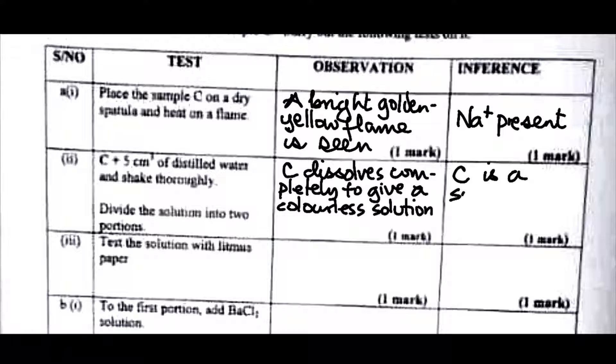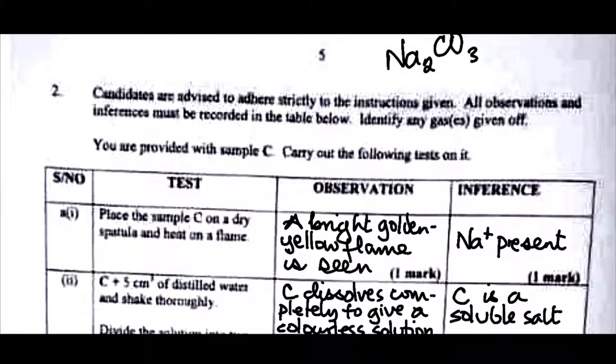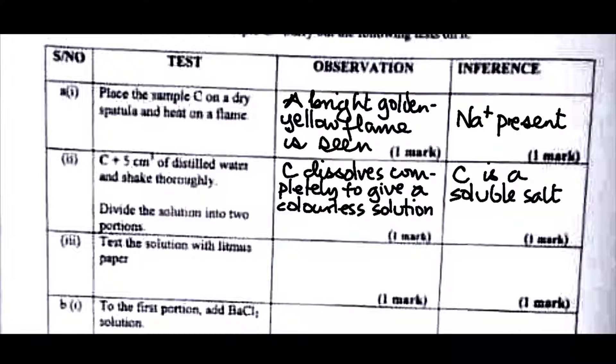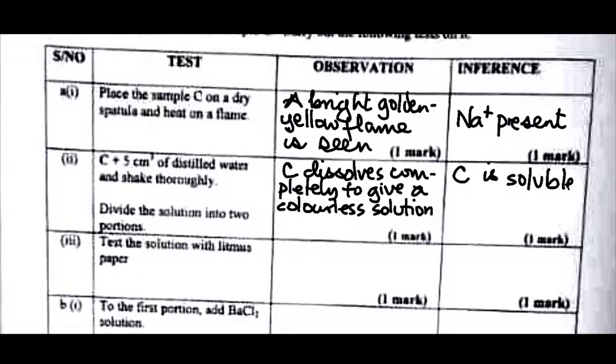So what does that tell us here? That C is soluble. Let's see, okay we just saw that we are given sample C. So we don't know if it is a salt or not. So it's not right to say C is a soluble salt. It's just okay to say C is soluble. Let's correct that. Except it was clearly stated in the introductory question, that's when you could say that C is a soluble salt. But since it was not stated, since we were silent about whether it's a salt, it could have been a base. That's why we should say that C is soluble.